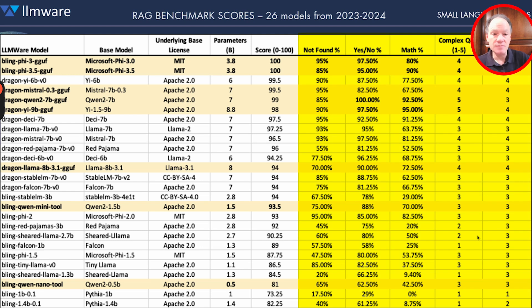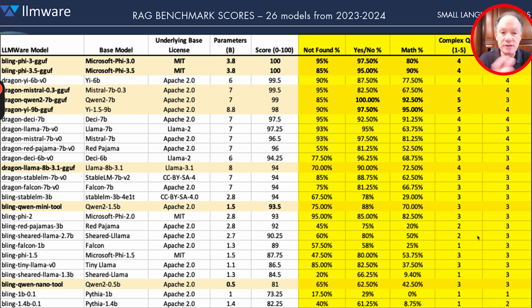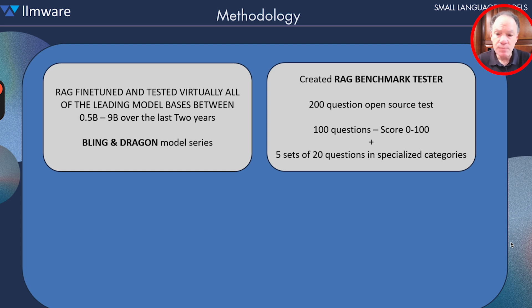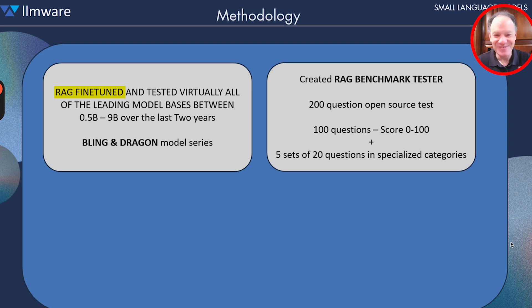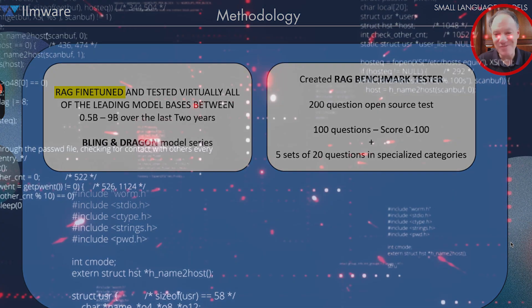The next five columns are deep dives in five specialized areas, each with 20 separate questions. We looked at each of those areas independently as specific and unique capabilities to evaluate. Now, our methodology: we bring all of these models through our proprietary RAG fine-tuning. Over the last two years, we have at some point tried to fine-tune just about every model — smaller even than 500 million, all the way down to 100 million — with not much success below that.